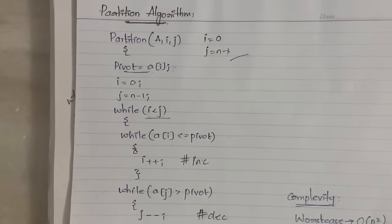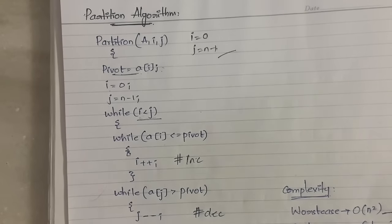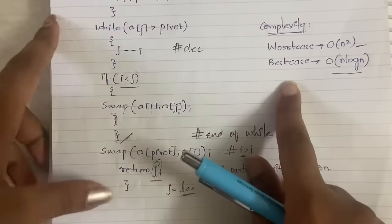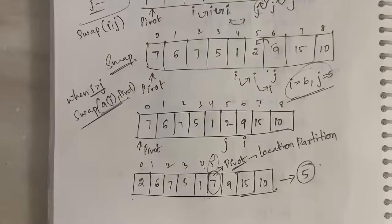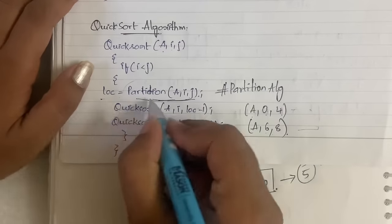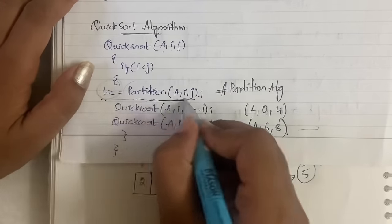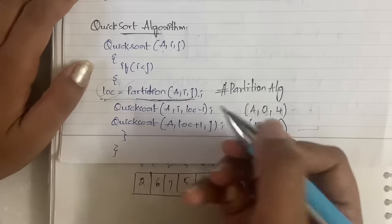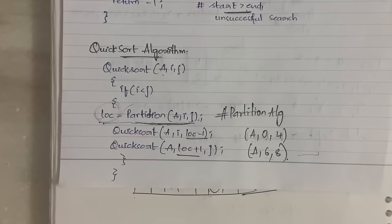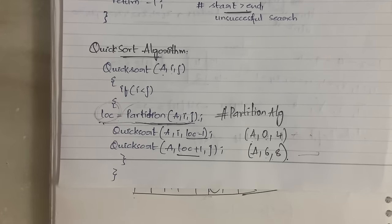That is all about this video. We covered the partition algorithm, its time complexity, and the QuickSort algorithm. The location returned by partition is critical — it is used to split the array in the recursive QuickSort calls. I hope I explained it clearly and you understood it. Thanks for your patience, and I'll meet you in the next video with another topic. Stay tuned!